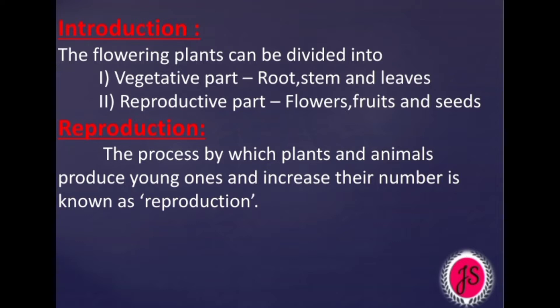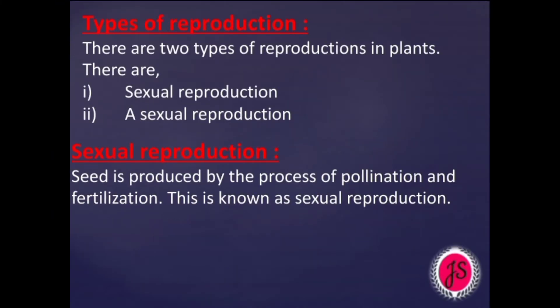Reproduction: The process by which plants and animals produce young ones and increase their number is known as Reproduction. There are two types of reproduction in plants: Sexual Reproduction and Asexual Reproduction.